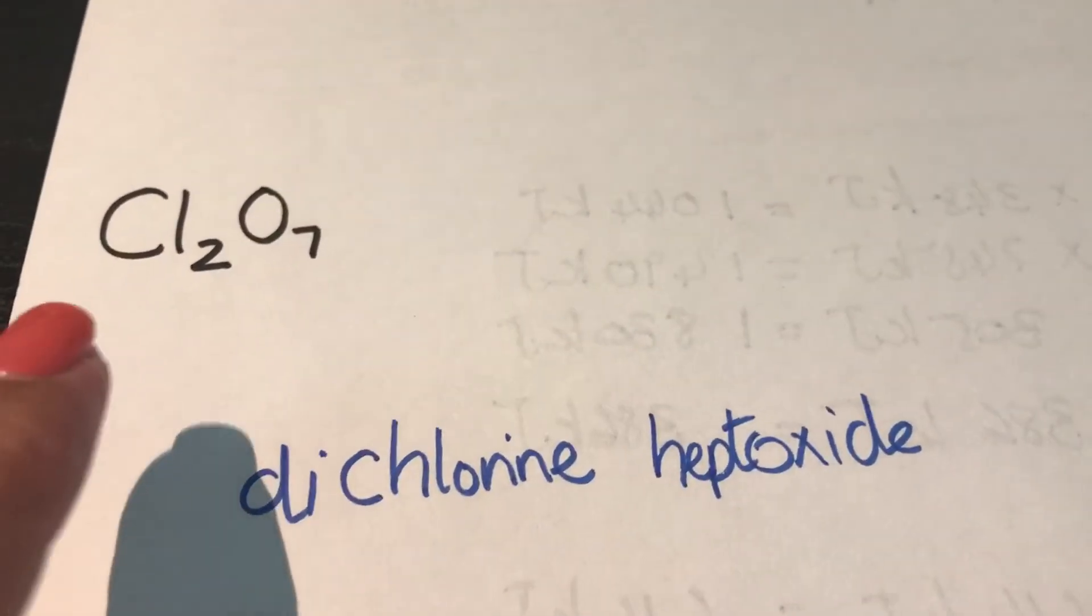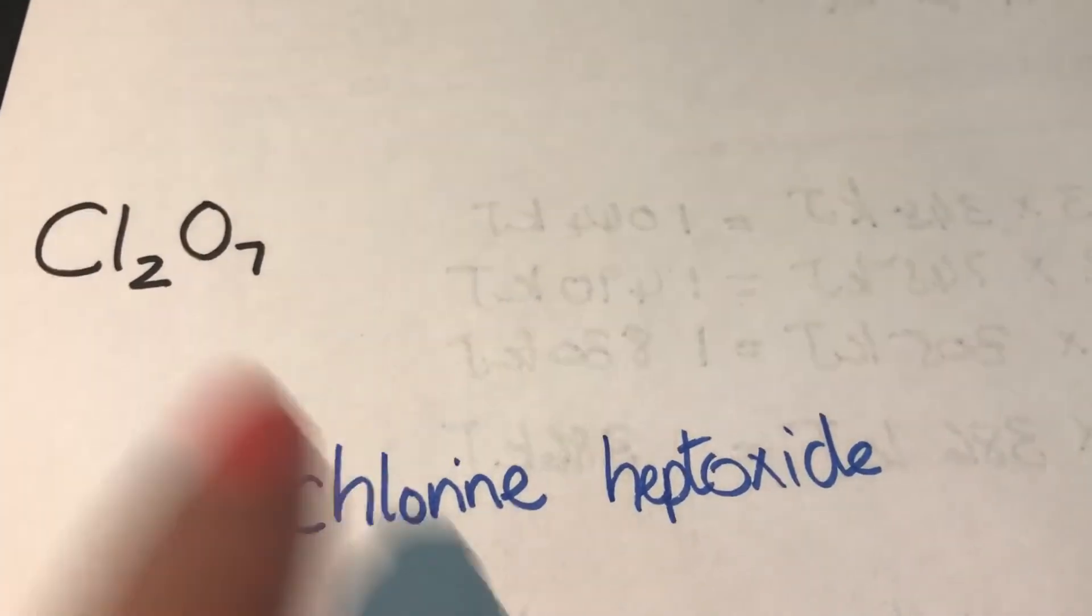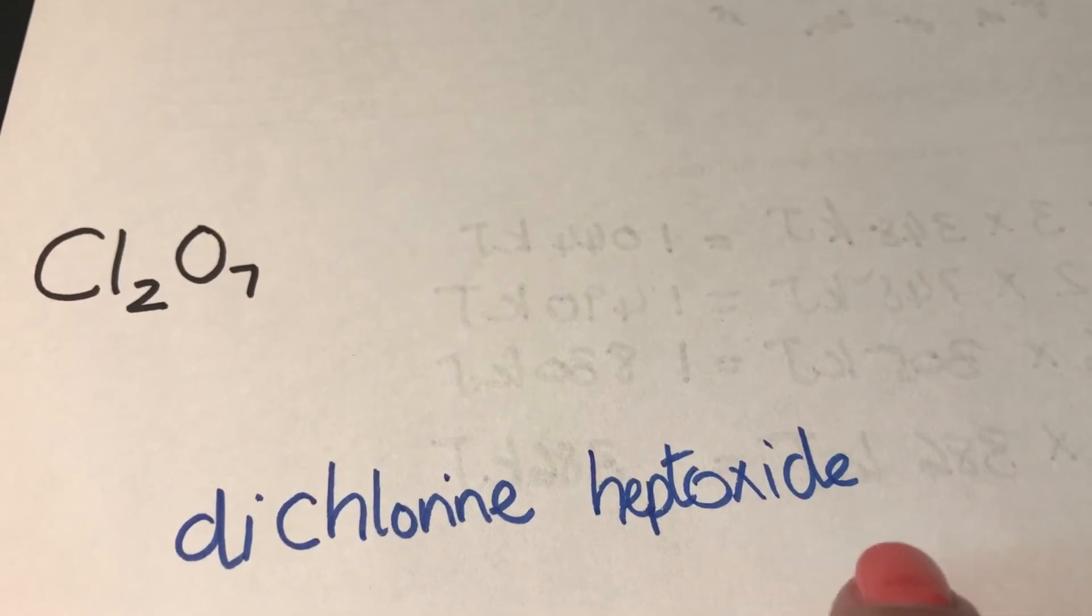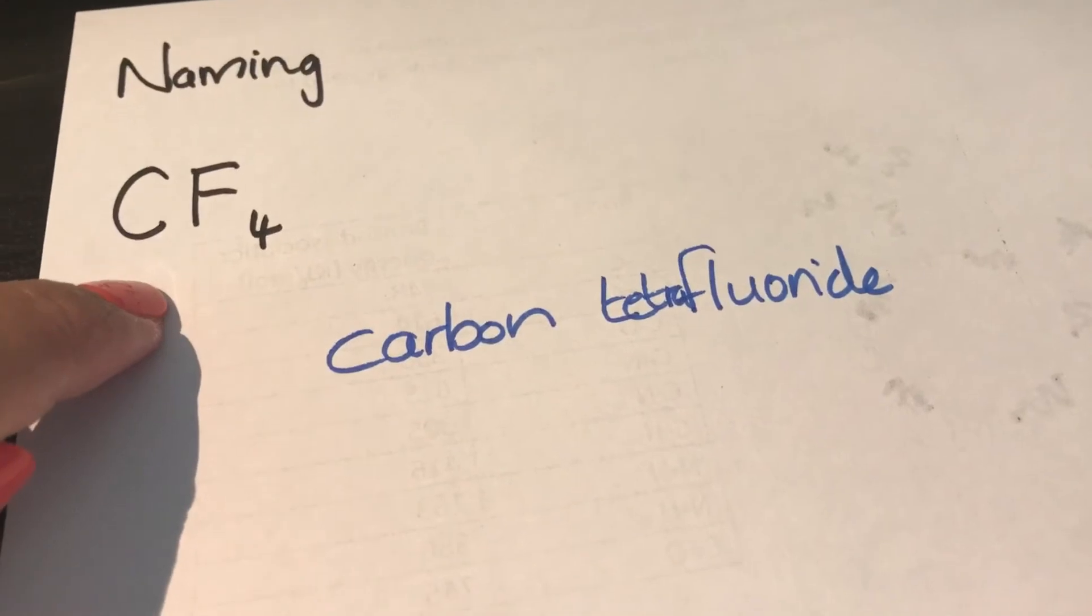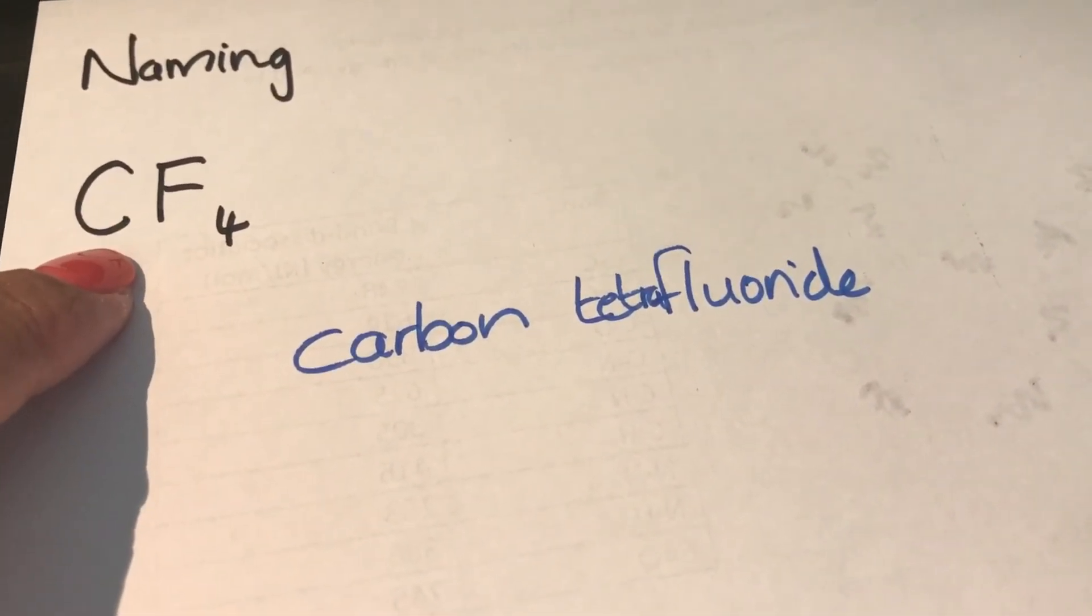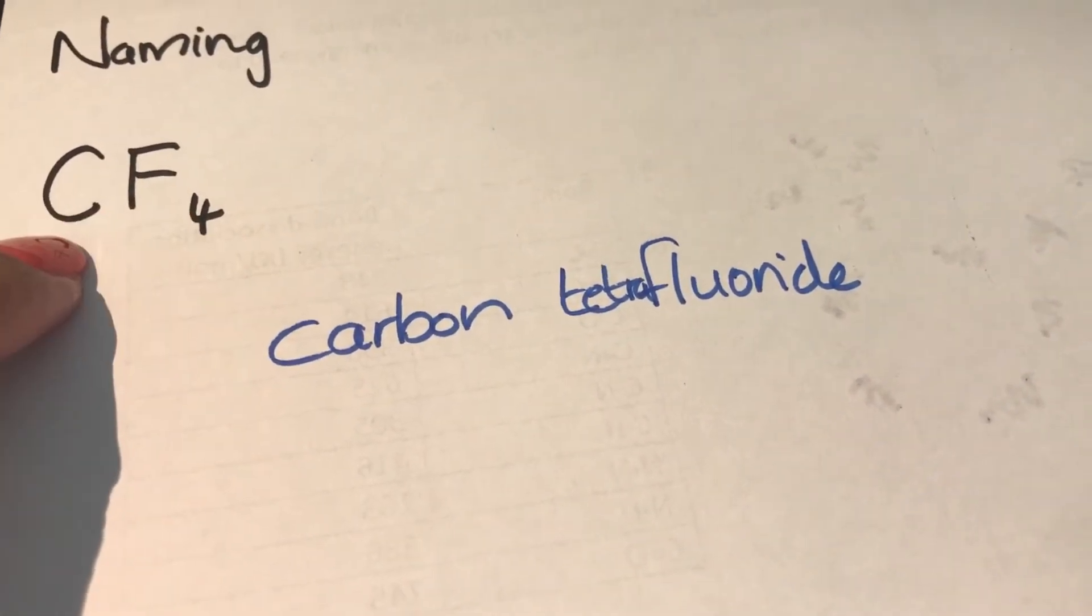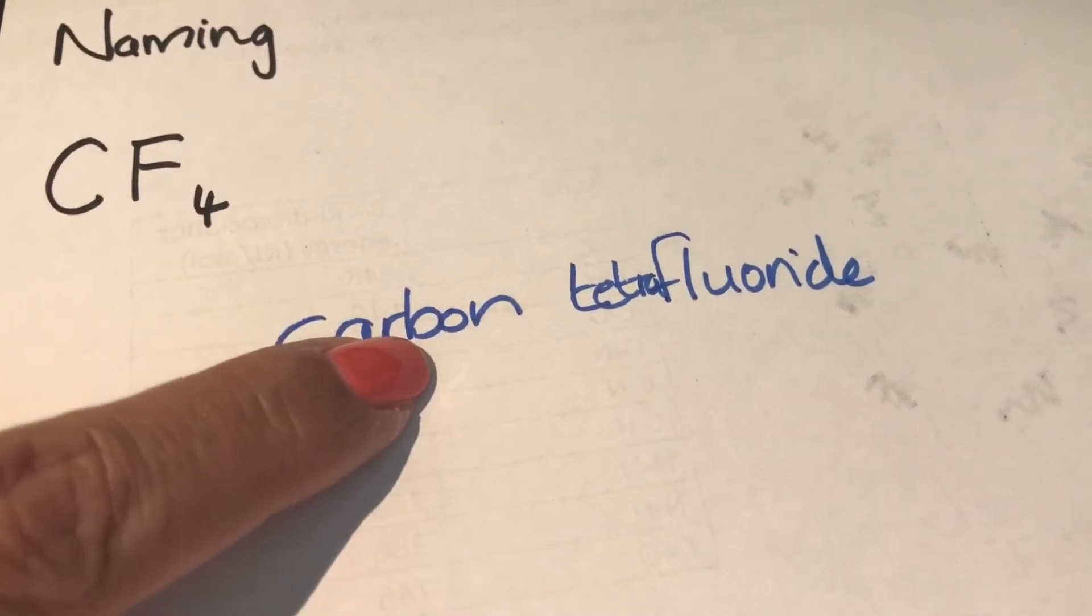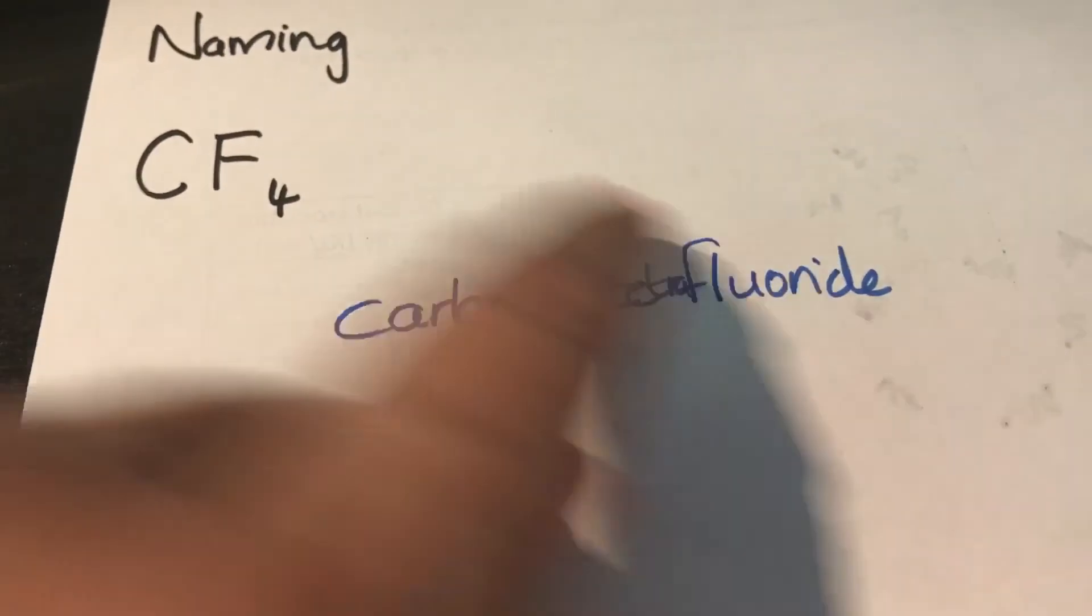So again, I'm going to repeat. First rule: you write down the name of the first element as it is - chlorine. The second element gets a suffix -ide. So oxygen becomes oxide. If I only have one of the first element, if there's only one atom, I do not use the prefix mono. I will use the prefix mono for the second one. So in this case, carbon tetra, because there's four, fluorine becomes fluoride - carbon tetrafluoride.